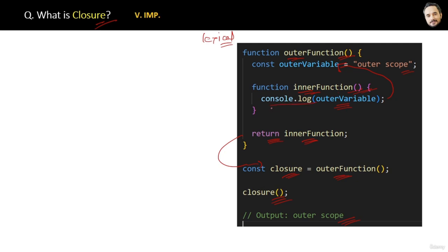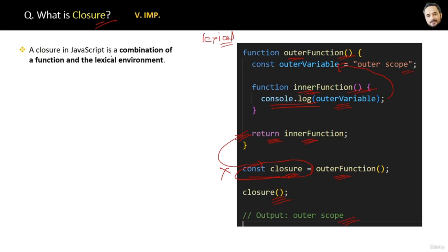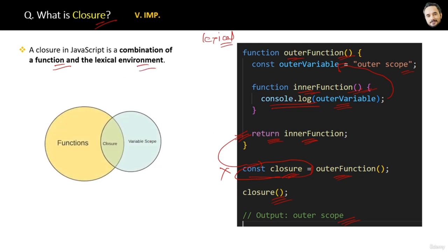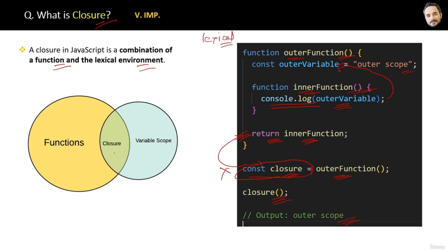What is the difference between lexical scoping and closure? Closure uses the lexical scoping concept, but in lexical scoping there is no need to return the function and assign it to a closure variable — closure is one step beyond lexical scoping. A closure in JavaScript is a combination of a function and the lexical environment. You can imagine it as having qualities of both functions and lexical scoping.